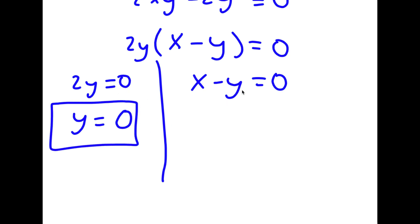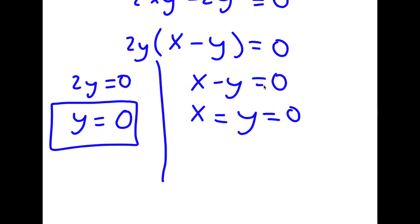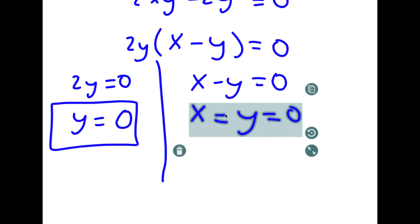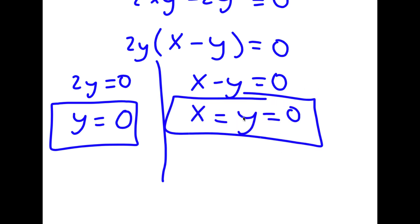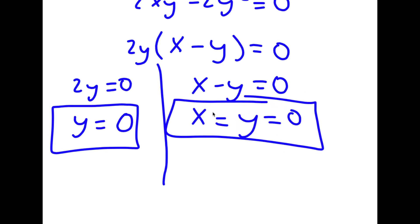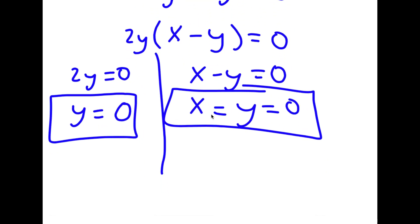If x minus y equals zero, this means x is equal to y. And since y equals zero, x is also equal to zero. So both variables are equal to zero.